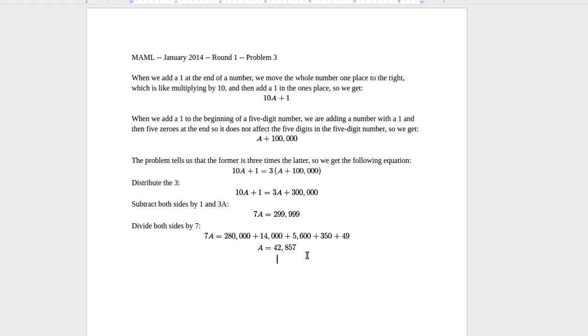And if you take 42,857 and then you add a 1 at the end, and then you add a 1 at the beginning and multiply it by 3, you'll see that you get the same number. So 142,857 times 3 is the same as 428,571. So it works out.